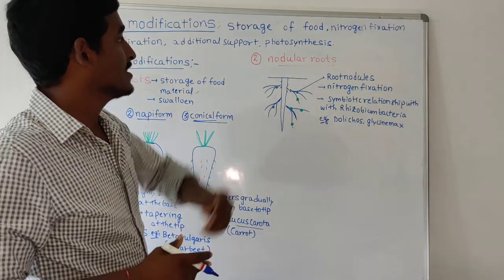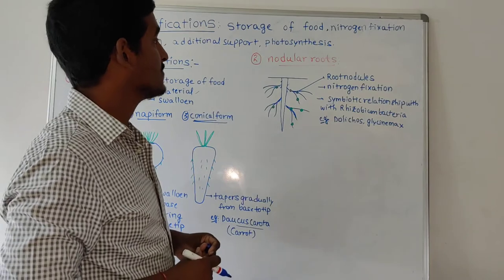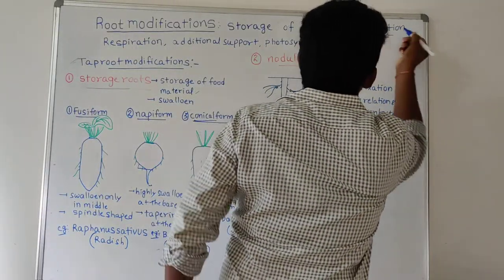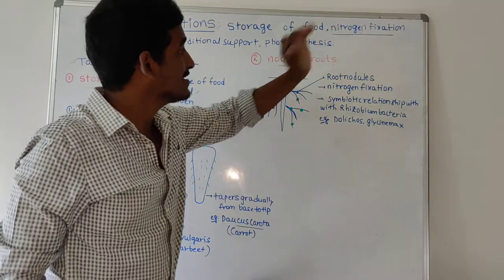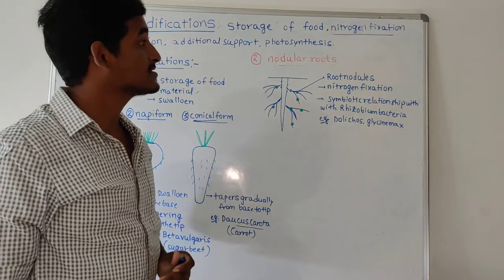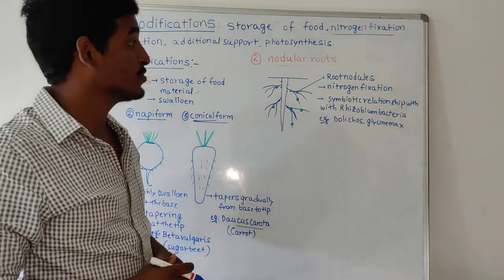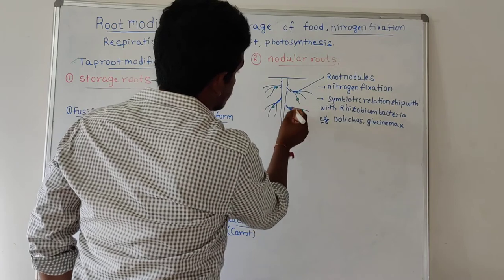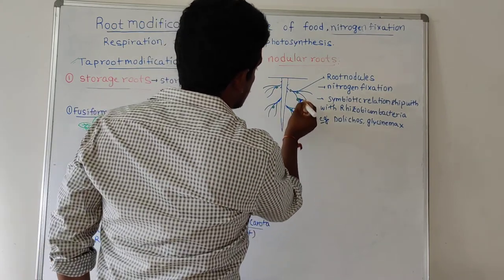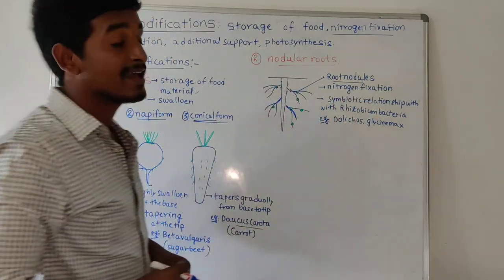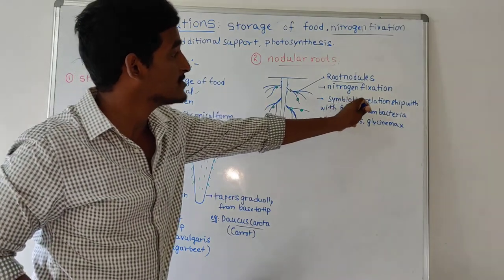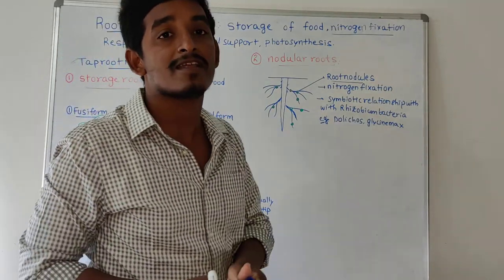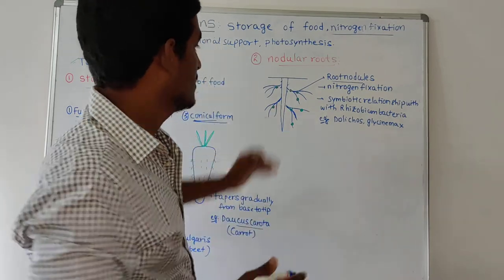Next are nodular roots. The function of nodular roots is nitrogen fixation — a second special function of roots. Nitrogen fixation takes place with the help of Rhizobium bacteria. In this root there are some small nodule-like structures present — these are the root nodules involved in nitrogen fixation. They show a symbiotic relationship with Rhizobium bacteria, meaning they are helpful to each other.